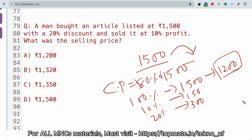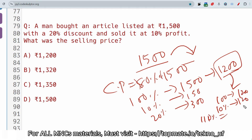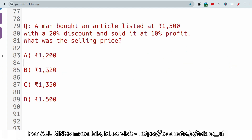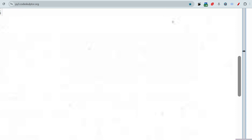He sold it at 10% profit on the cost price of ₹1200. 10% of ₹1200 is ₹120, so the selling price is ₹1200 + ₹120 = ₹1320. The correct answer is ₹1320. Please subscribe to this channel to get the latest content.